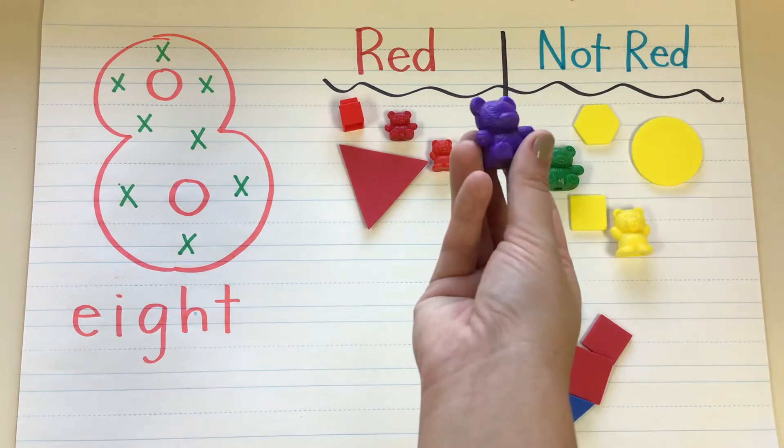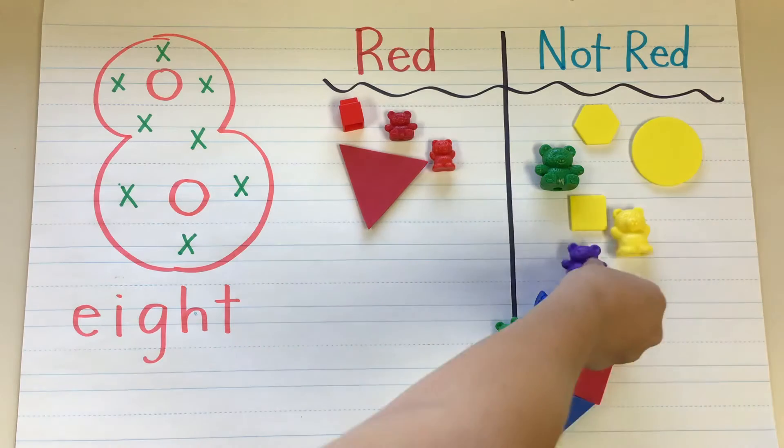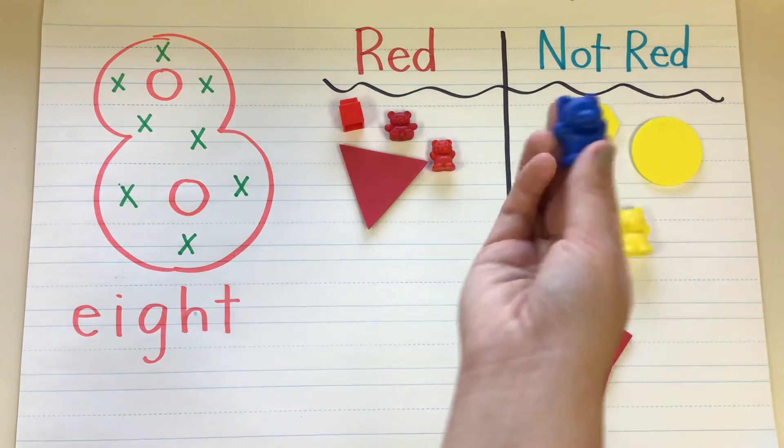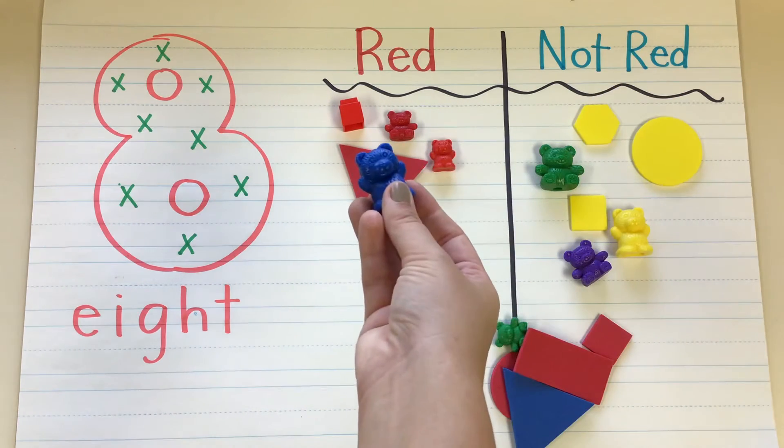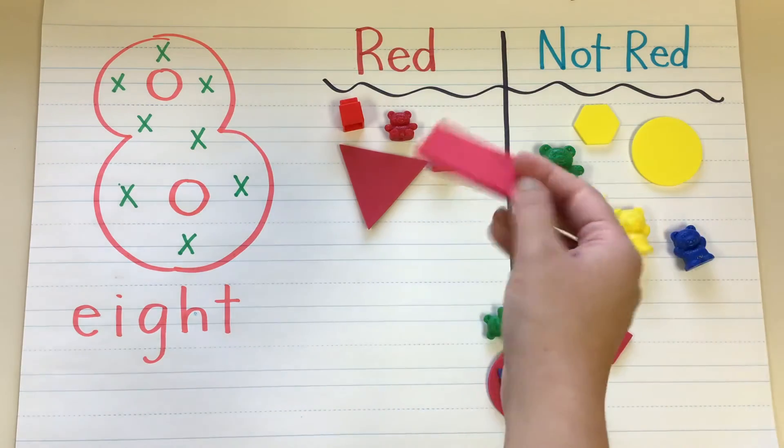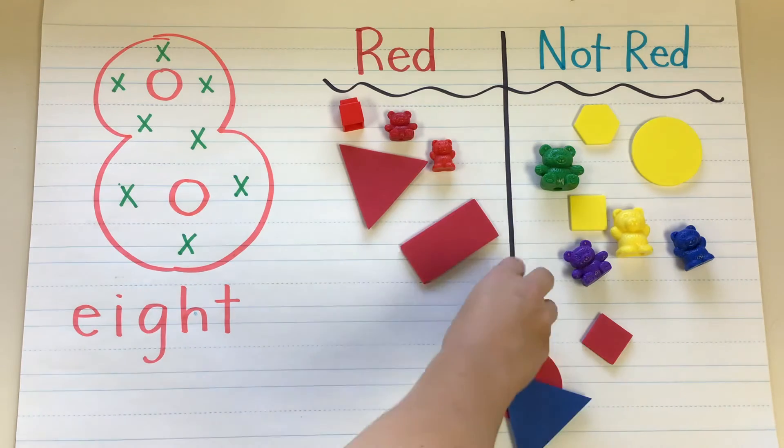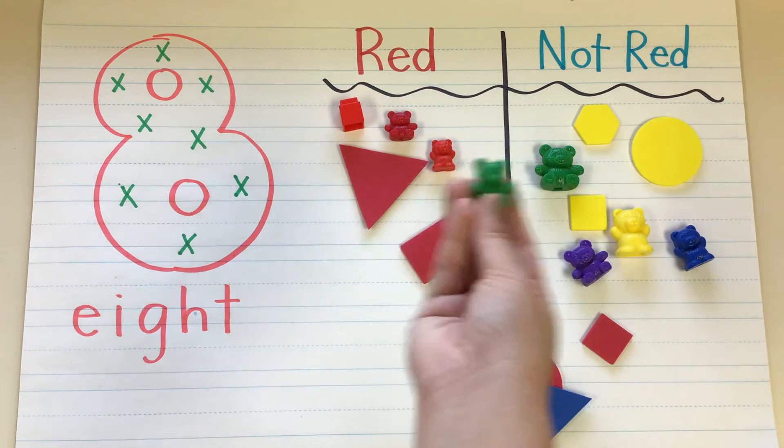What about this one? Is that the same? Nope. So we're going to sort it over here because it's not red. What about this bear? Same color? Nope. It's going over here with the ones that aren't red. What about this one? Same? Yep. Staying over there.